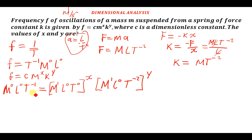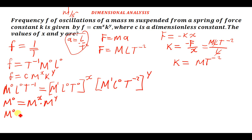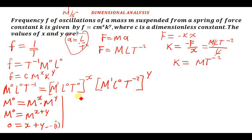Now let's pair the corresponding terms. For M: on the left side M is raised to zero; on the right side we have M to the power x from the mass term and M to the power y from the k term. When multiplying indices with the same base we add the powers, giving M to the power x plus y. Since the bases are the same the powers are equal, so zero equals x plus y. That is our first equation.